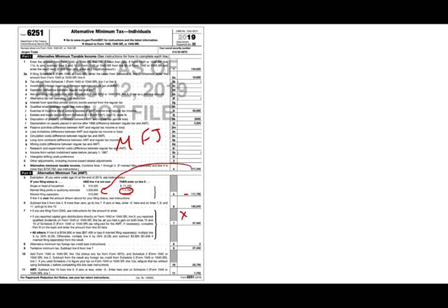The applicable tax rate: if line 6 is below $194,800, we multiply by 26%; if it's above, we multiply by 28% minus $3,896. Taking $105,545 times 26%, our AMT tax is $27,442. We have no credits, so AMT is $27,442. Comparing to regular tax of $25,740 — we do have AMT, resulting in an additional $1,702 on our taxes.